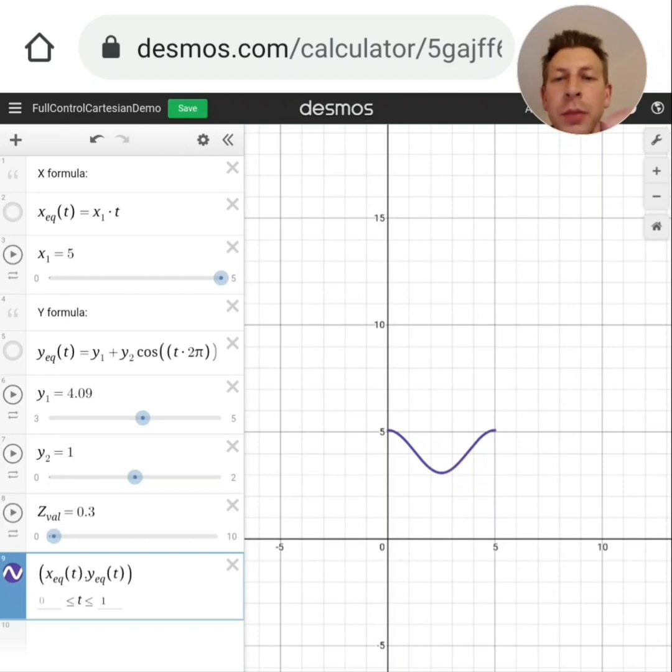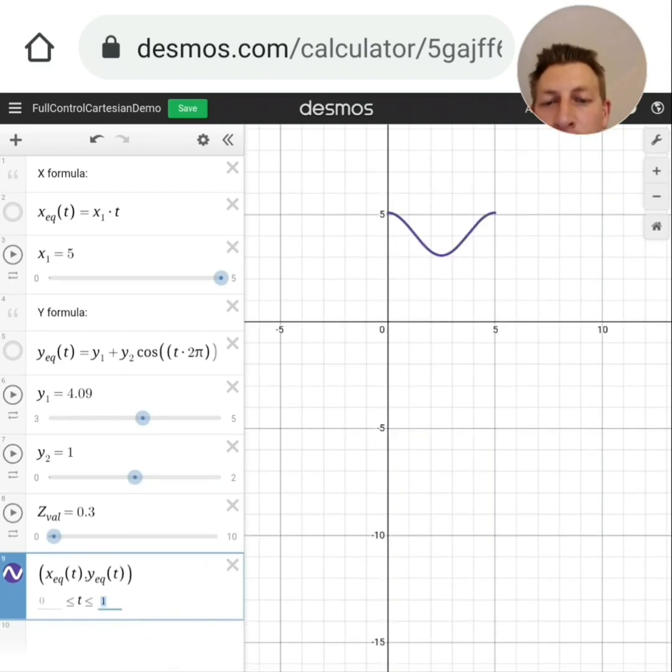So in the Cartesian one we've got an x equation, a y equation, and then to actually plot it on screen here there's this equation at the bottom that's putting them together. That equation at the bottom, we can change the values so it's currently set to go from zero to one for t.